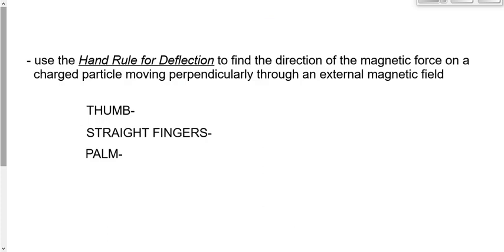Let's formalize that. The hand rule for deflection is used to find the direction of the magnetic force on a charged particle. Use the right hand for a positive particle, left hand for a negative particle, moving perpendicularly through an external magnetic field. Your thumb points in the direction of the moving charge, your straightened fingers point in the direction of the external magnetic field, and your palm automatically points in the direction of the magnetic force.